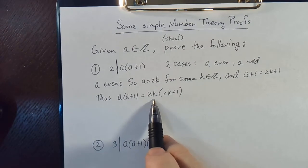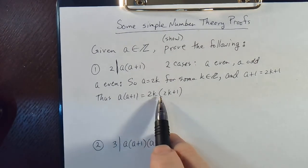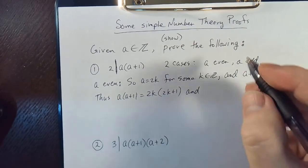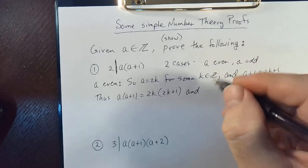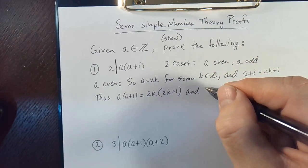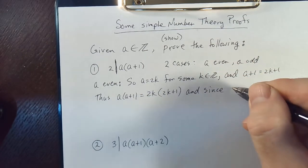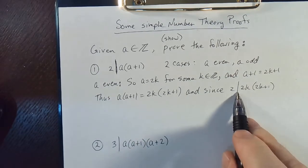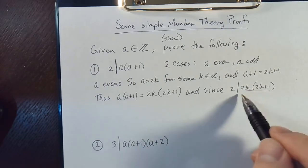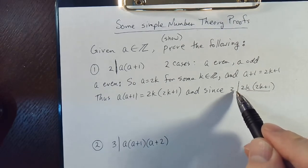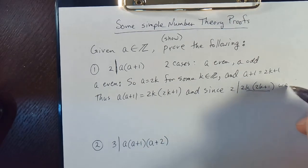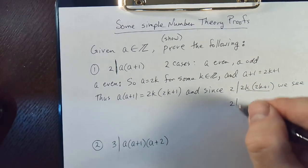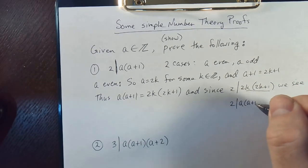Clearly, this is an even number because it's 2 times something. So since 2 divides 2k times 2k plus one — because 2 times that gives you the right-hand side — and since that's equal to a times a plus one, we get 2 divides a times a plus one.